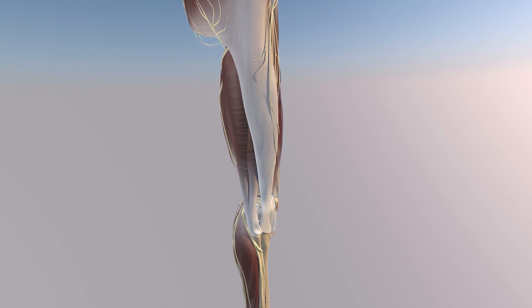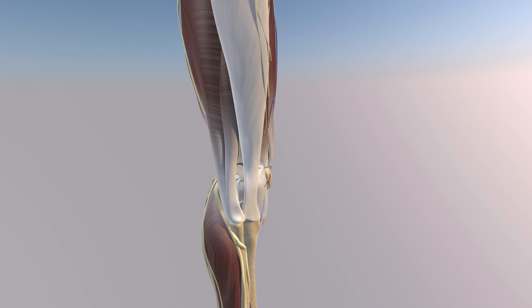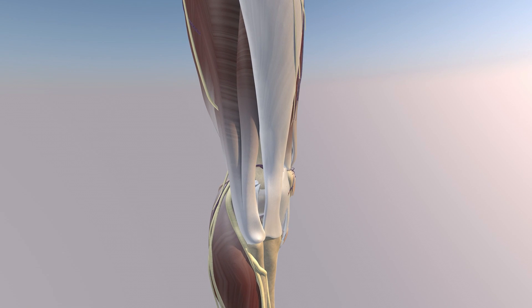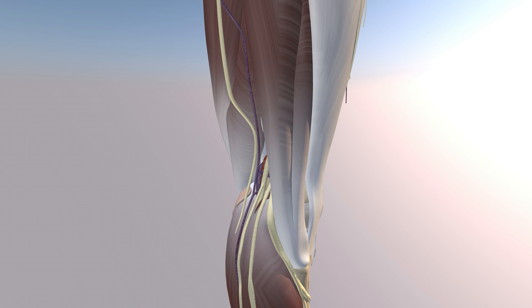Here we're going to focus on anatomy of the lateral knee and lateral thigh, focusing in on the knee. We can see the iliotibial band and the biceps femoris muscles — both the short and the long head. You can also appreciate the semimembranosus muscle and semitendinosus muscle above that.